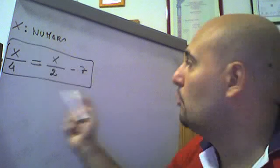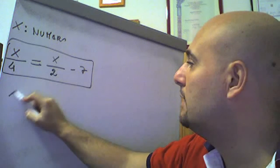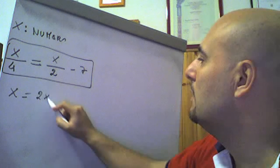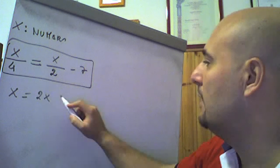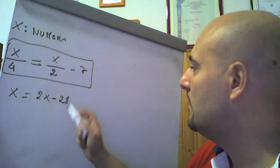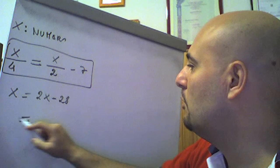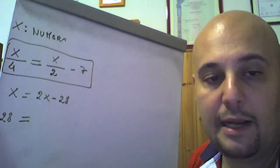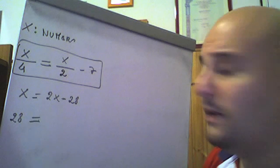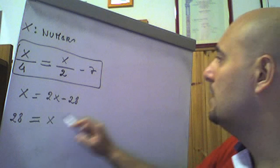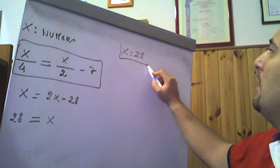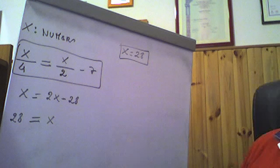Minimo comune multiplo tra 4, 2, 1 è 4. 4 diviso 4, 1 per x è x; uguale a 4 diviso 2, 2 per x è 2x; 4 diviso 1, 4 per -7, meno 28. Il -28 lo portiamo a sinistra e cambia di segno, diventa +28. 2x - x è x uguale a 28. Il numero da ottenere è x = 28.